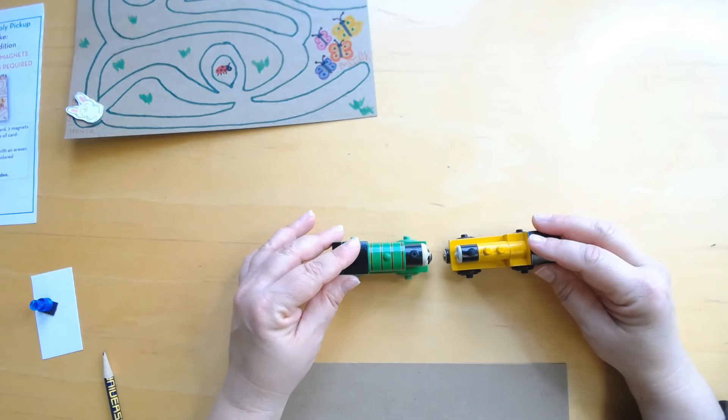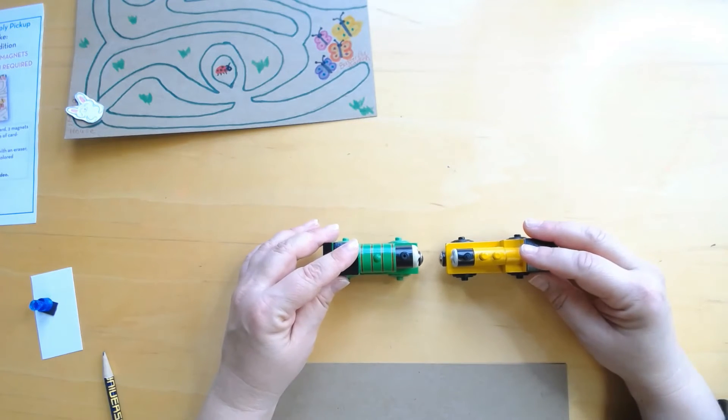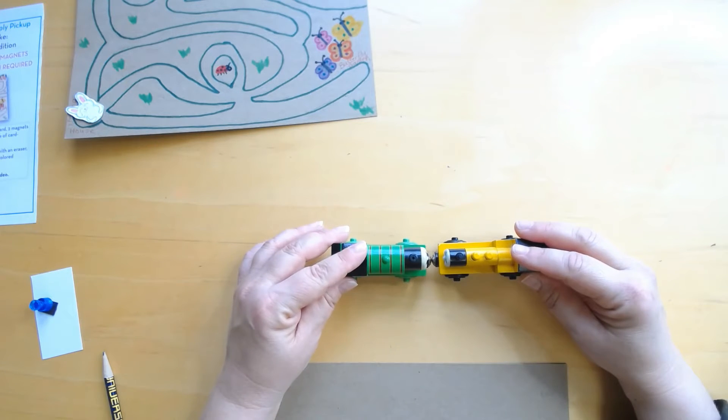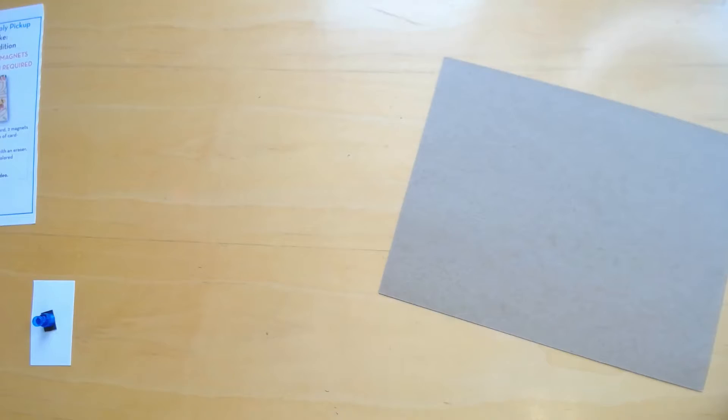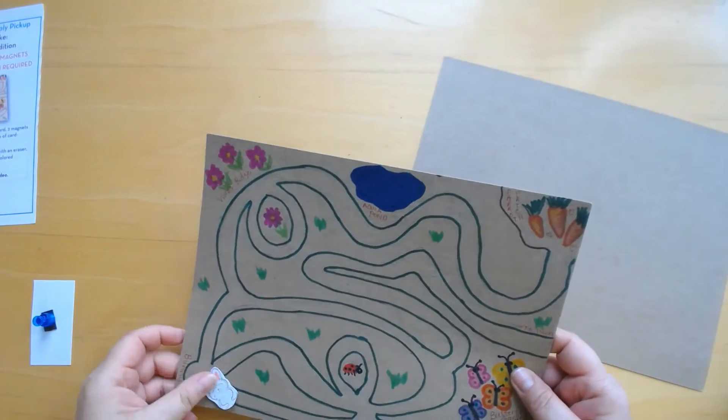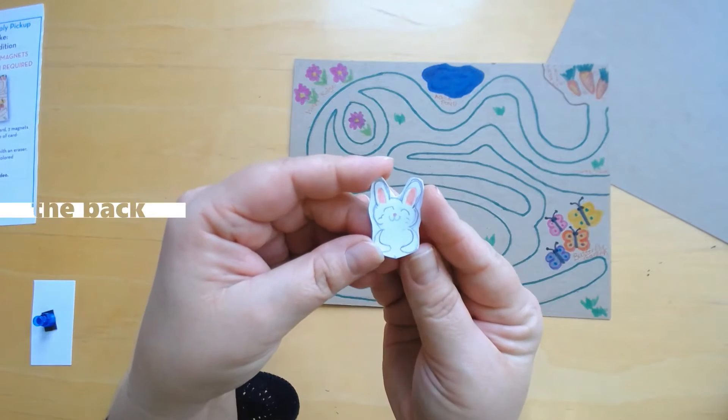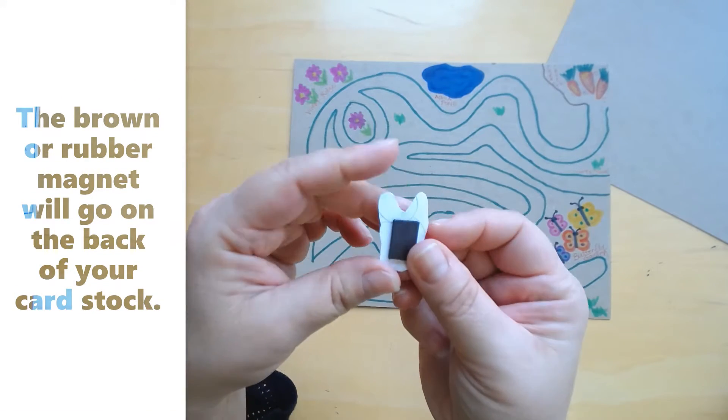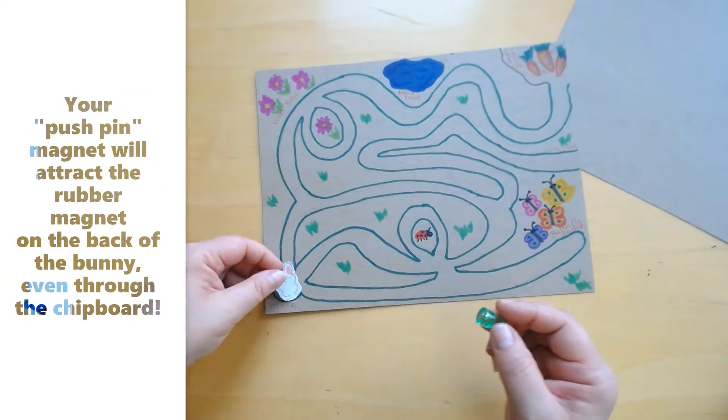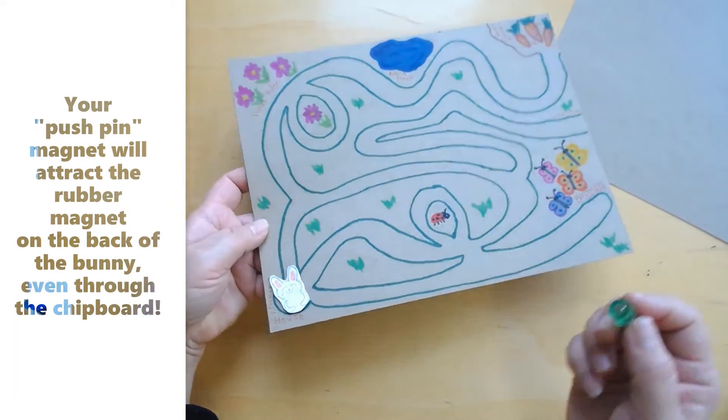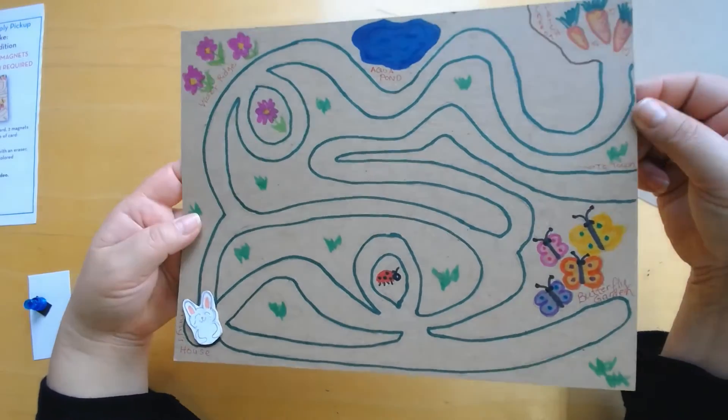I can show you the maze that I made. This is my bunny and on the back of my bunny I have that other magnet. These attract. What we do with our bunny is put it on the maze and the bunny wants to get to the carrot patch, right?